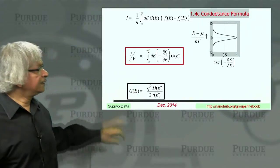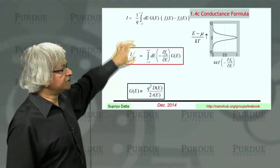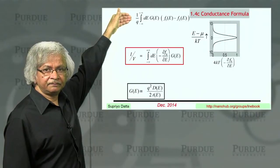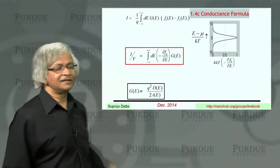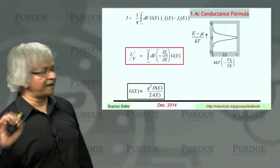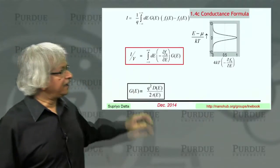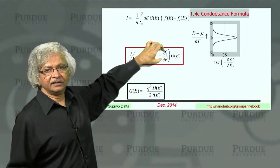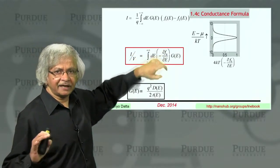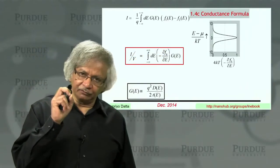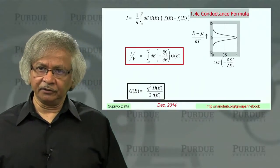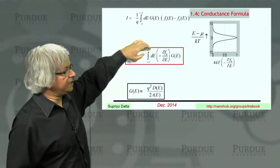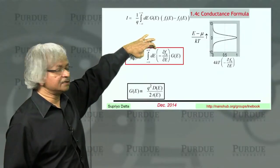That current divided by voltage. So this is the general current formula. And what we did in getting from here to here is use this Taylor series expansion idea that f1 minus f2 can be written as del f del E times the applied voltage. And that applies only if the applied voltage is small compared to kT. So using that idea, you get this expression for the conductance.